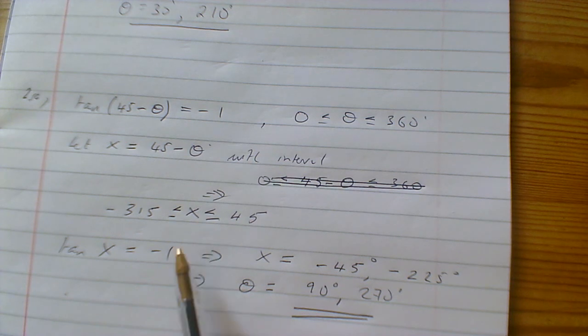We undo the substitution: 45 - (-45) = 90 and 45 - (-225) = 270. That's it.